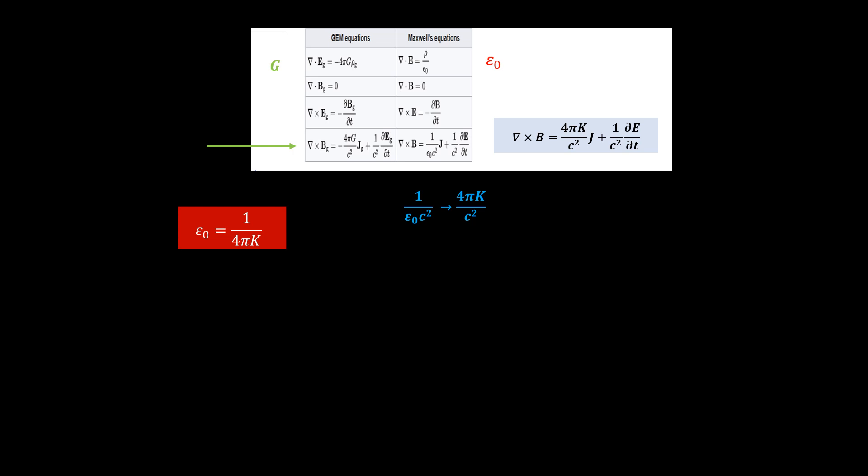What about the first equation? Here, rho over epsilon naught becomes 4 pi k times rho, the same as this one for gravitation. So we see that in essence, the only difference is the minus signs.